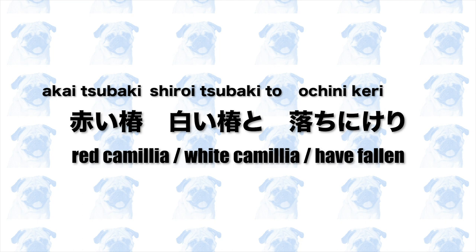The camellia haiku also contains one of the most common kireji — namely, keri. Keri shows that the camellia flowers have just fallen onto the ground. Since keri is a kireji that identifies what the poet found beautiful or moving, I believe the poet saw the red camellia flower drop, immediately followed by the white camellia flower, and found this contrasting imagery and the ephemeral beauty of the flowers breathtaking.